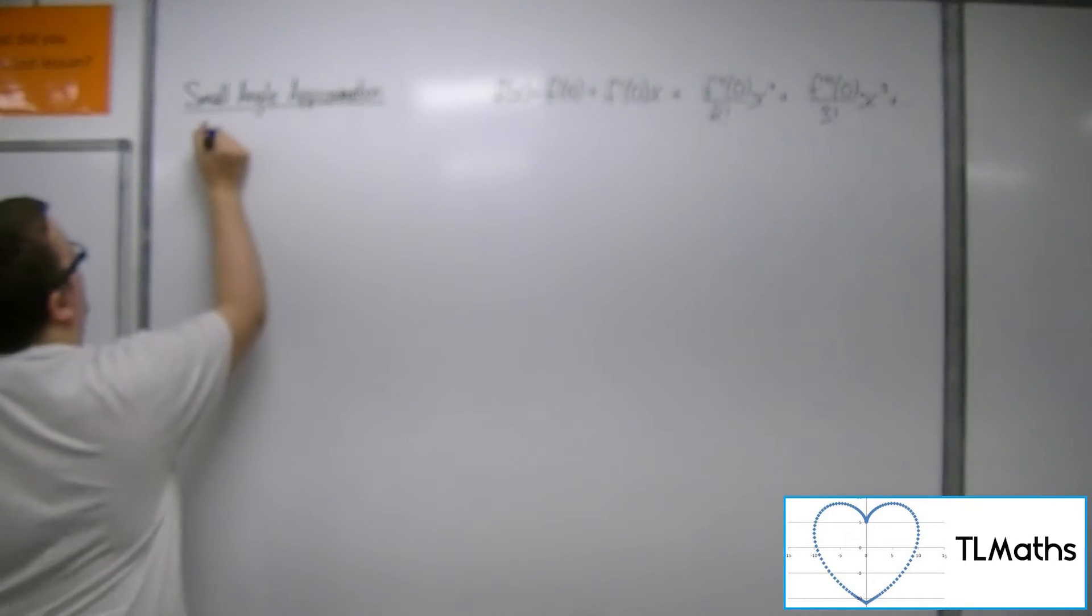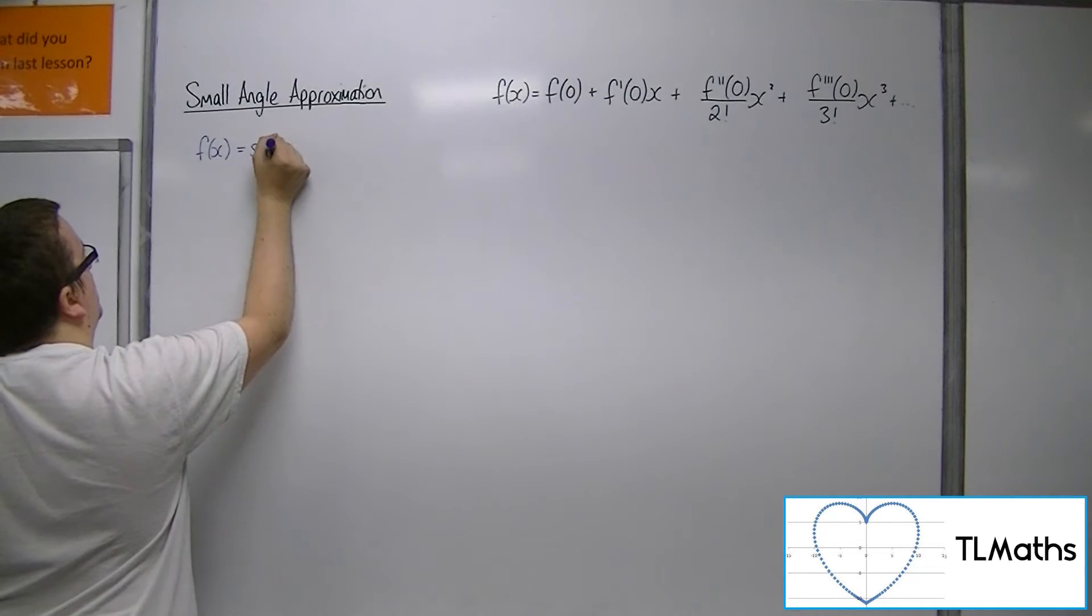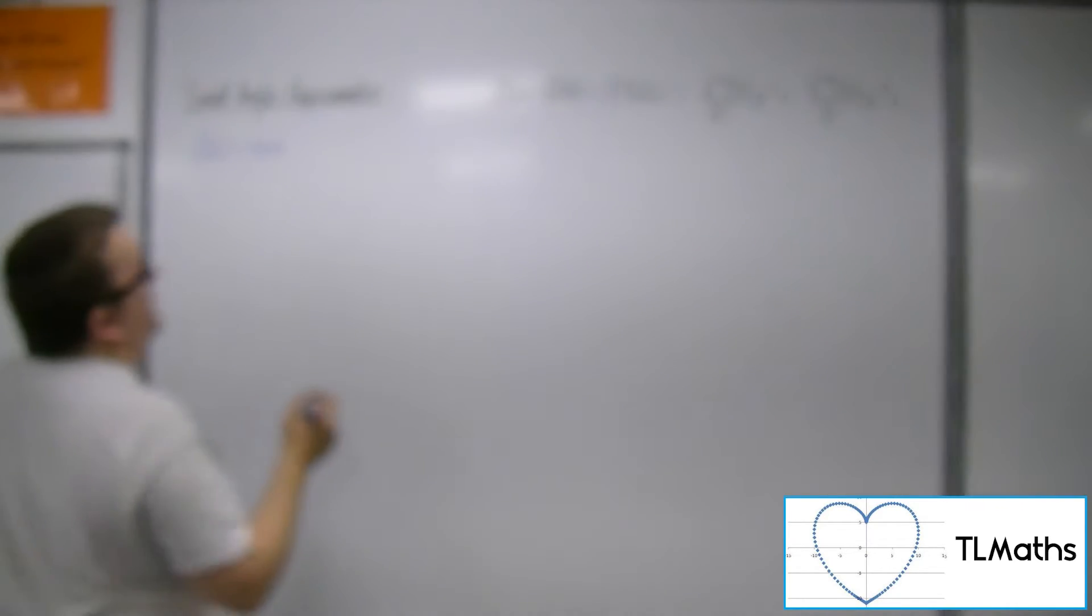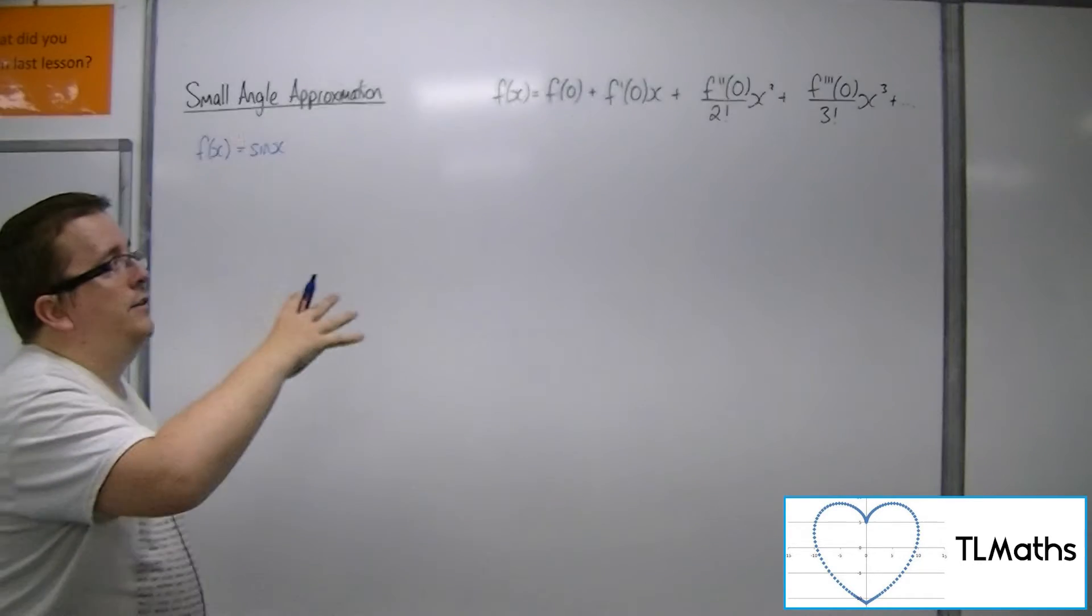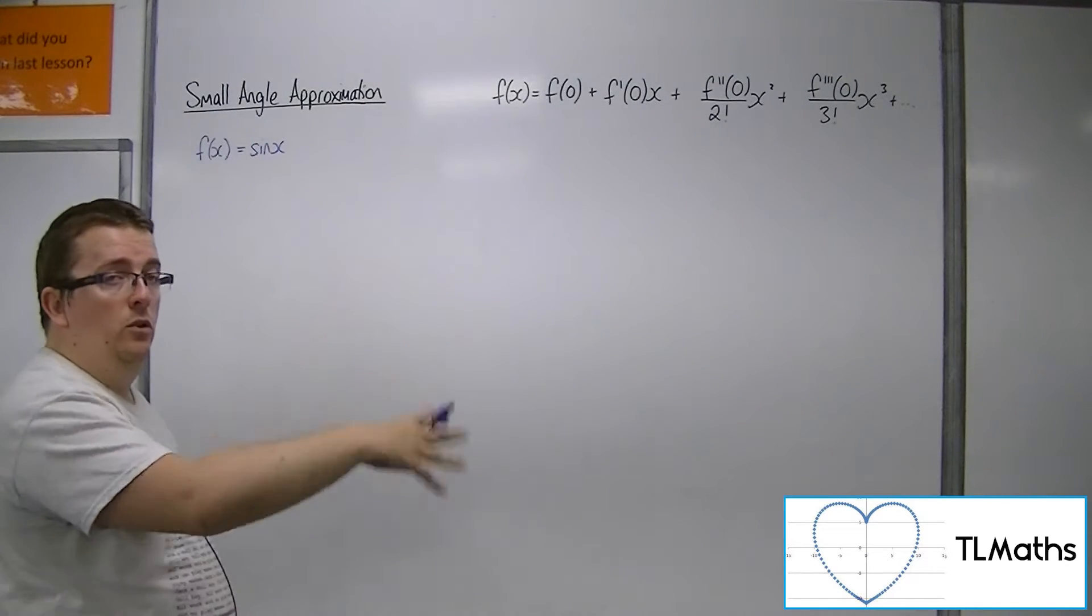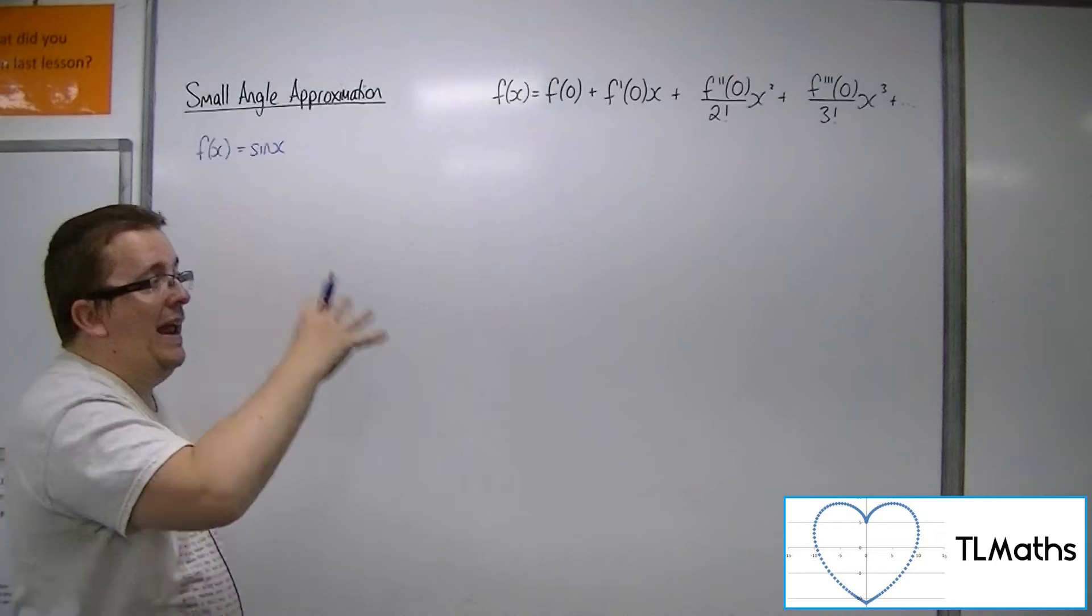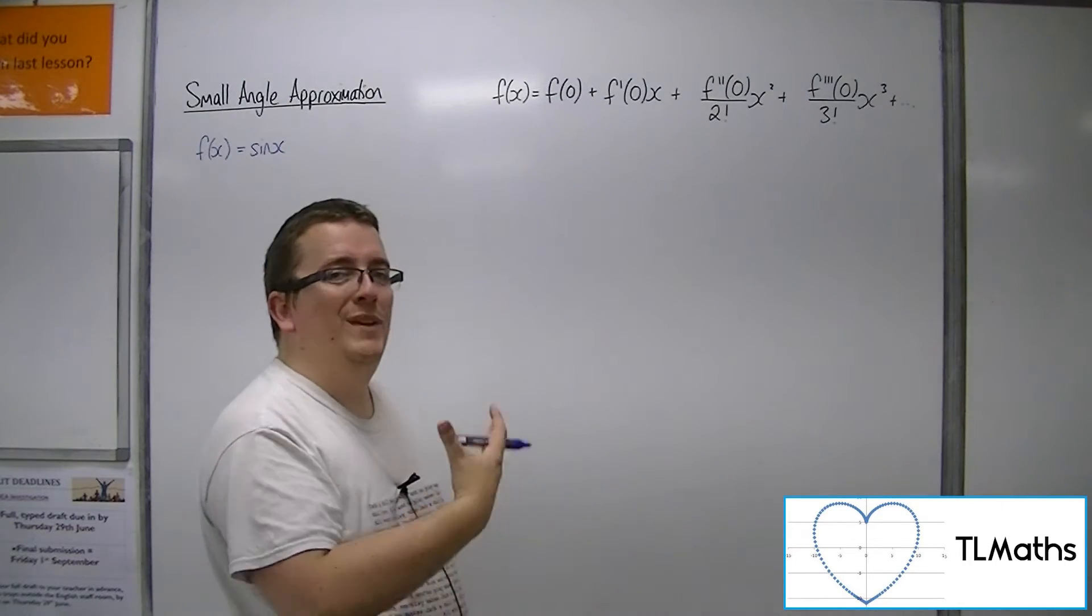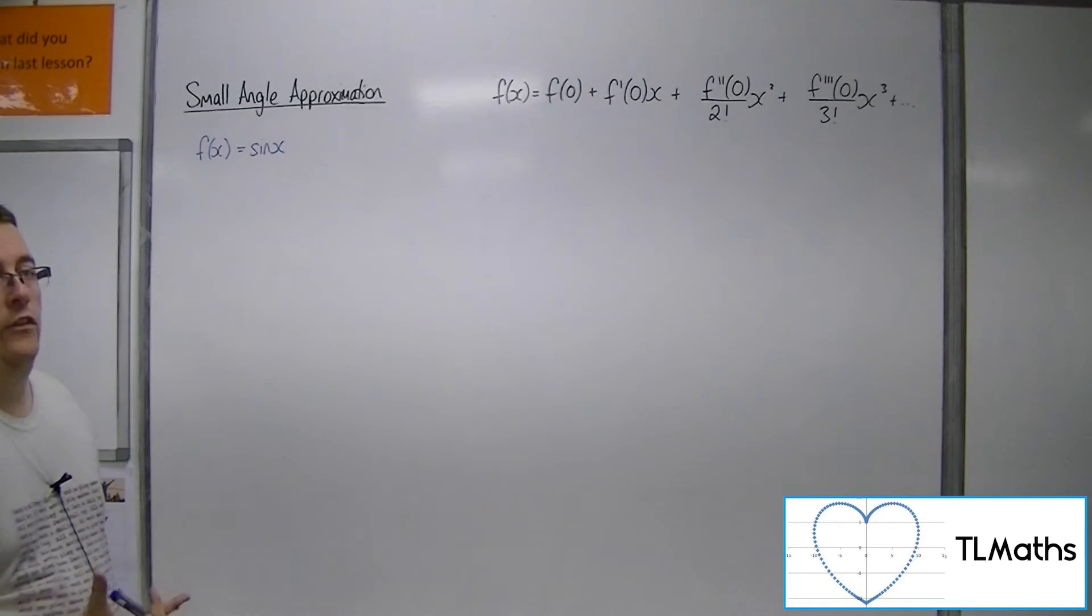So, if f of x is sine x, then what I'm going to need is f prime, f double prime. But what we do with the small angle approximations is to ignore anything that is x cubed or greater than that. We don't need anything further than x squared.